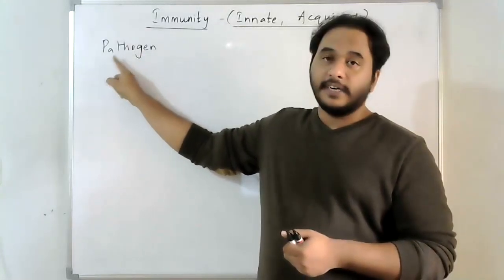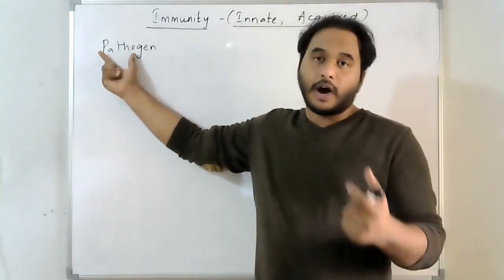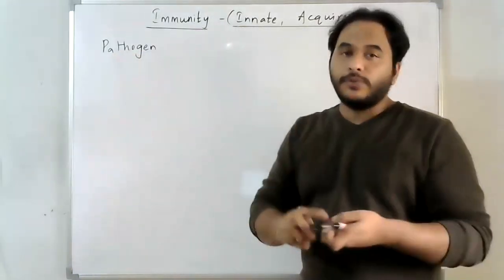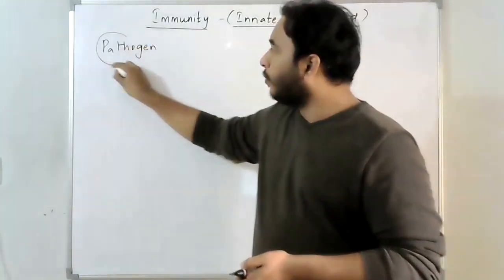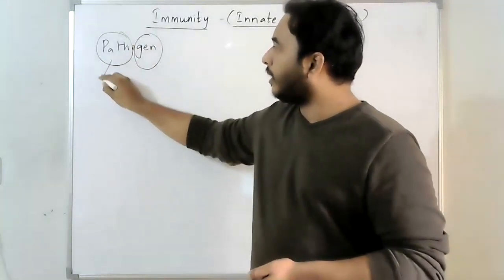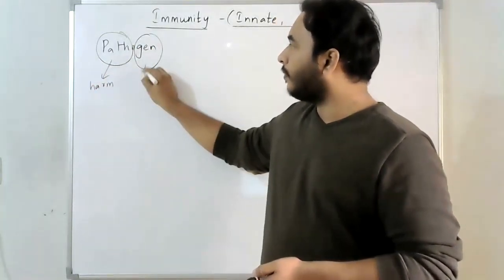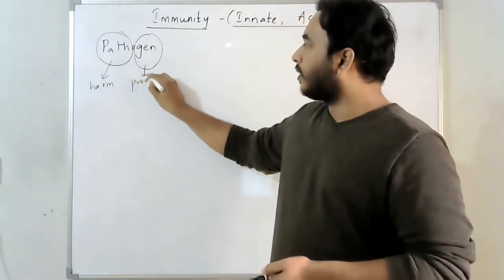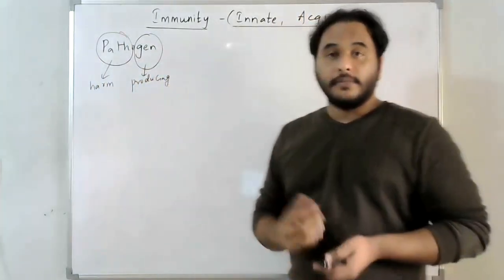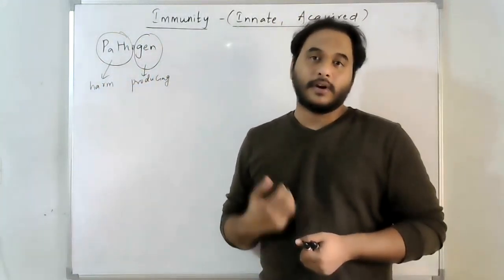Pathos means disease, and genic means producing. So pathogenic means disease-producing. The pathogen is nothing but the agent which causes disease or any harm.